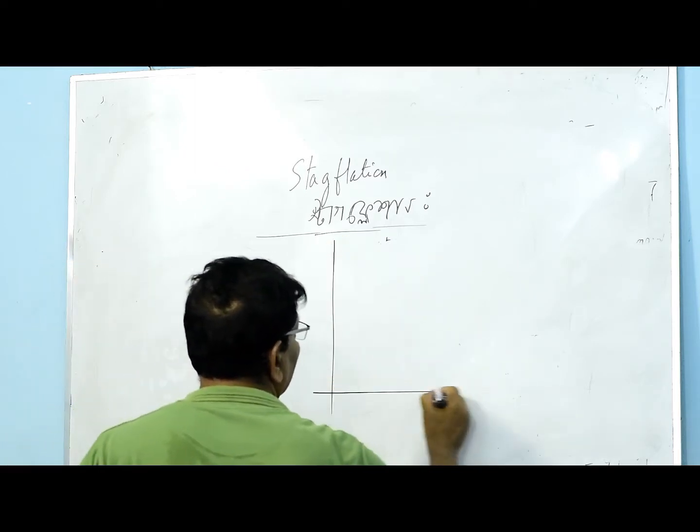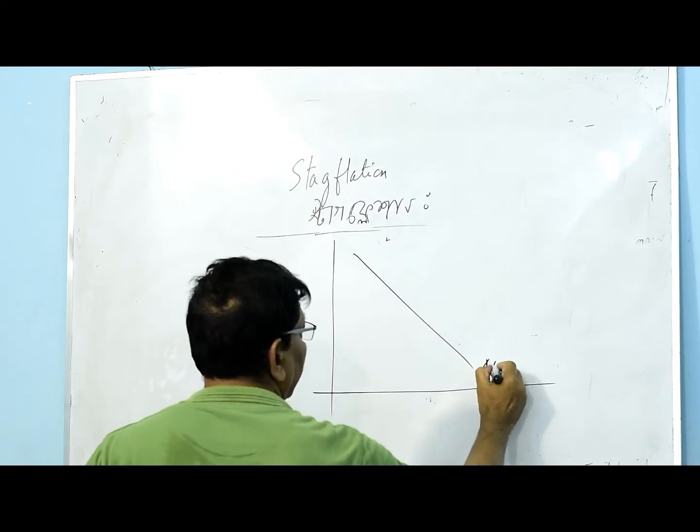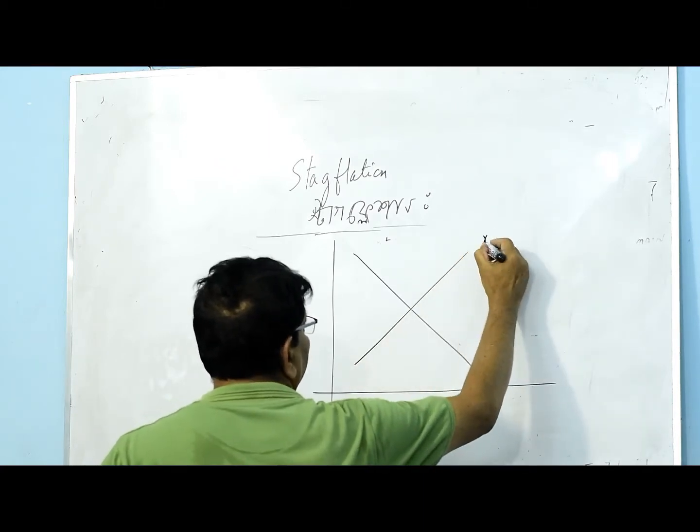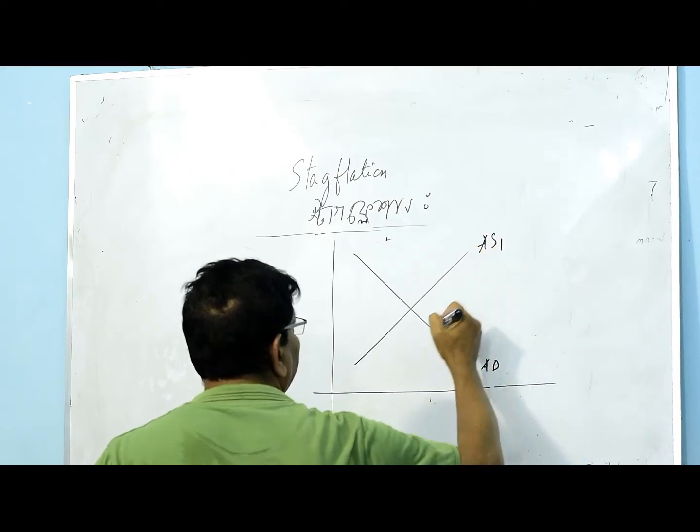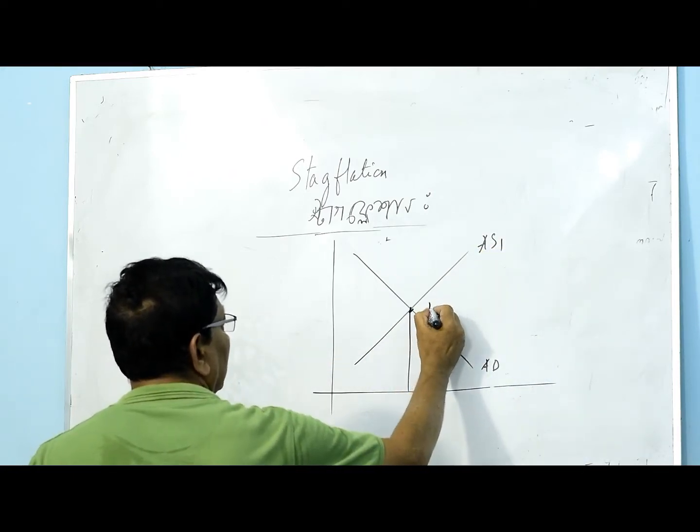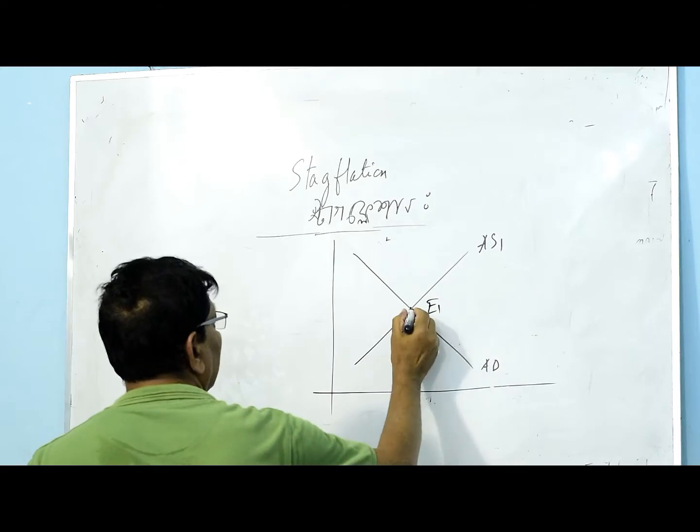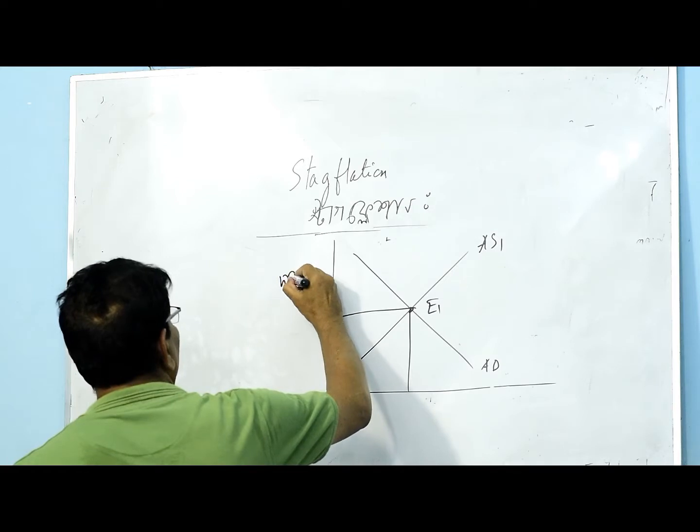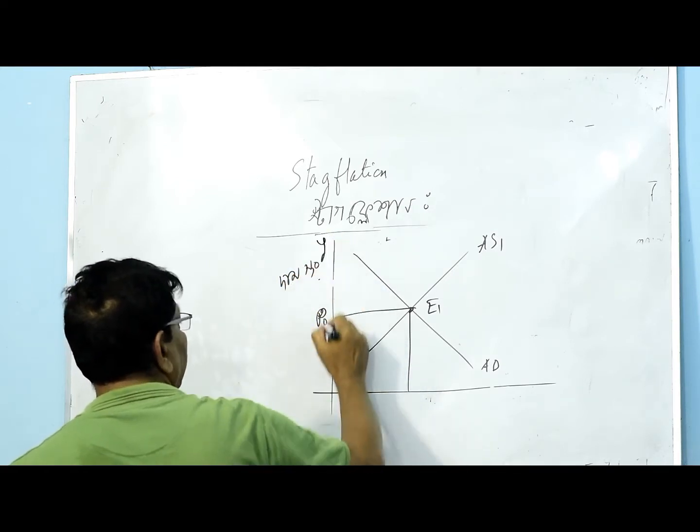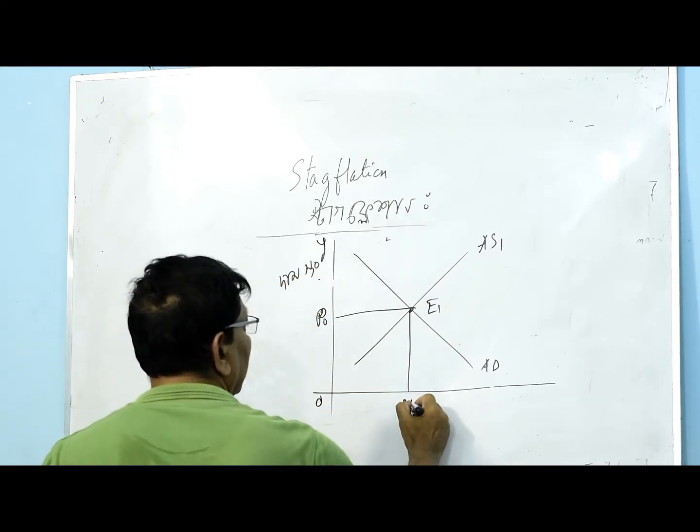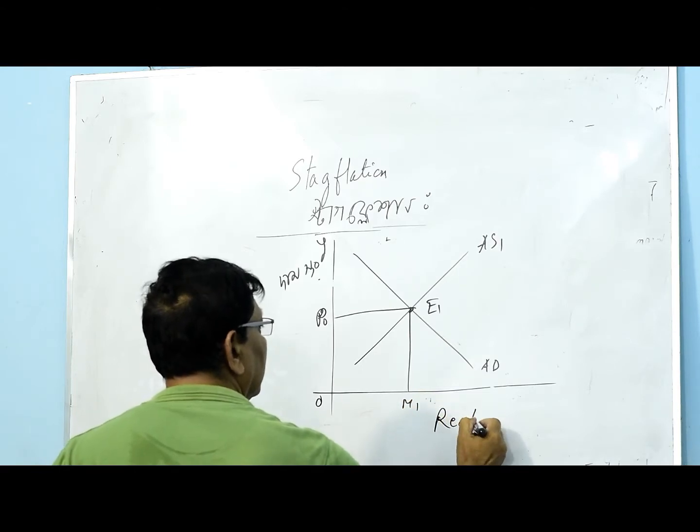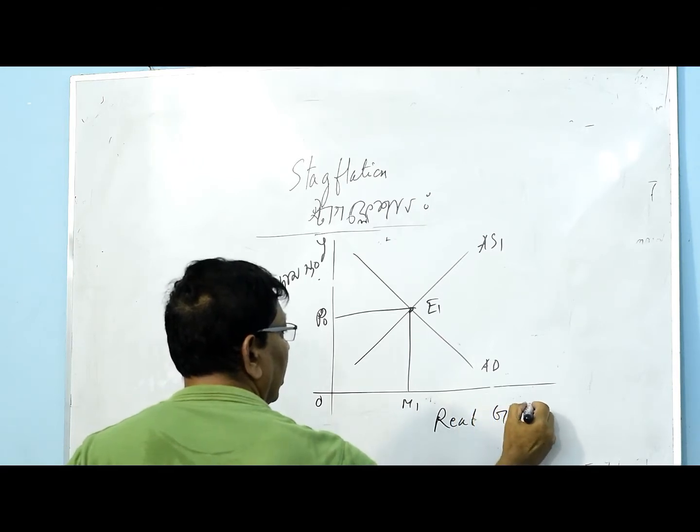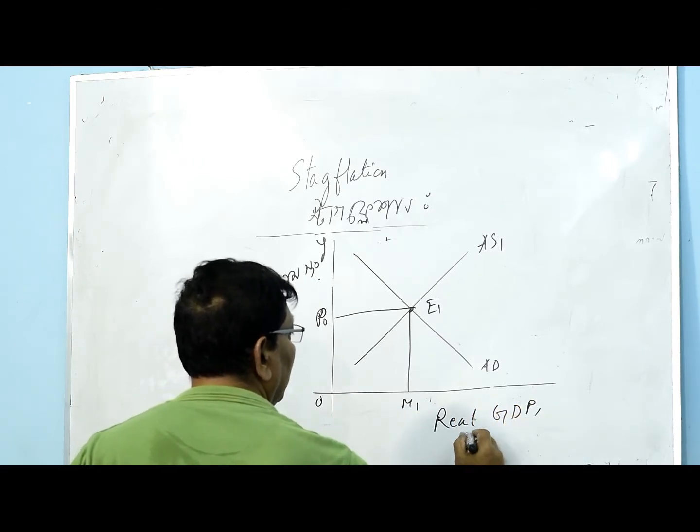Let's see our first-level aggregate demand. S1 is at E1, and P0 is the initial price level, and M1 is the real GDP at this equilibrium point.